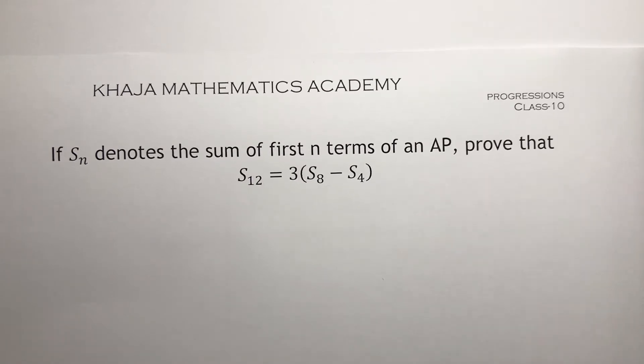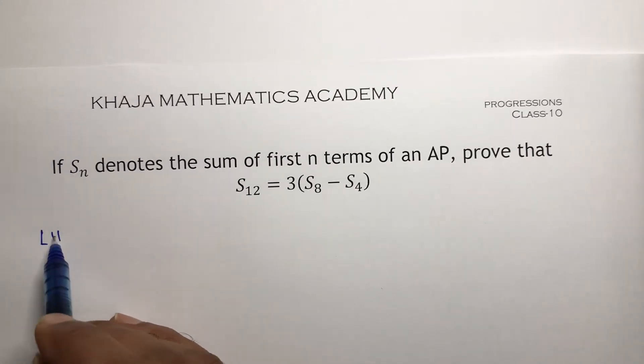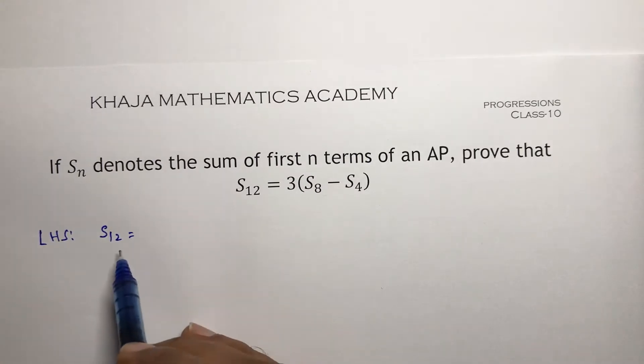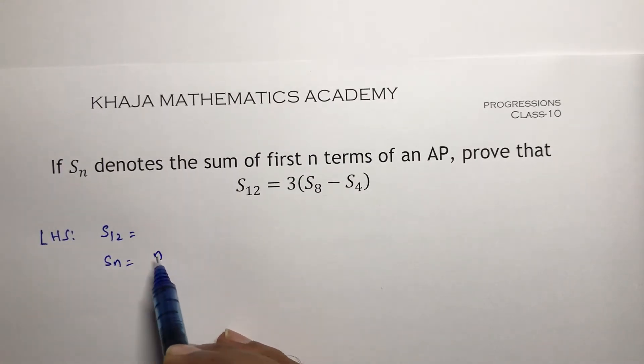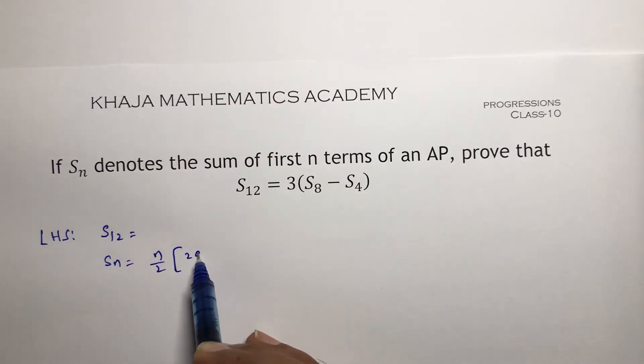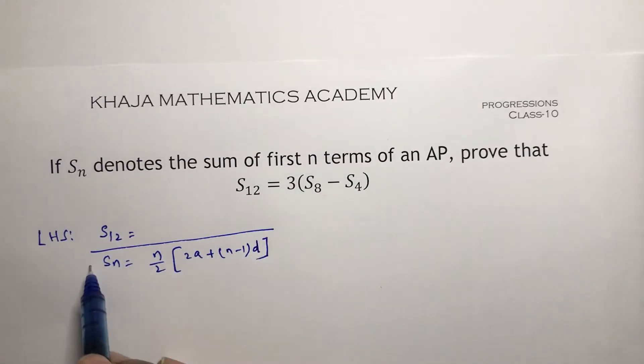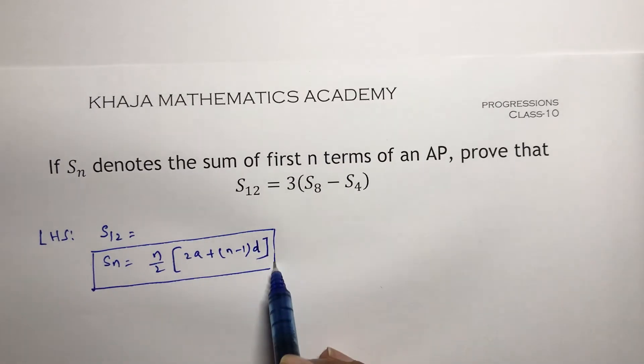So first I will solve LHS, that is S12. The Sn formula is n by 2 into 2A plus n minus 1 into D. This is the formula for sum of n terms of an AP.